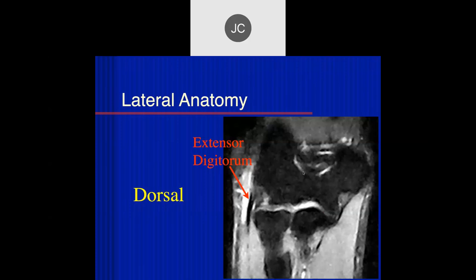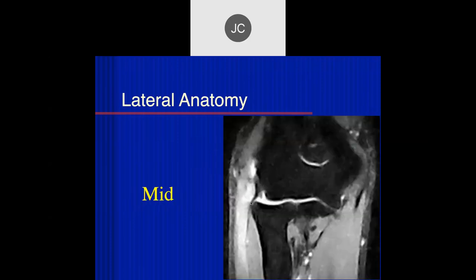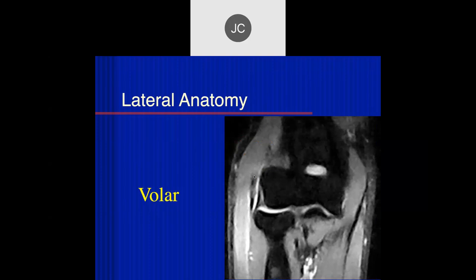The three components of the common extensor tendon are: the extensor digitorum communis most distally, the extensor carpi radialis brevis (ECRB) in the middle - which is the one generally initially torn - and the extensor carpi radialis longus which attaches more proximally. The brevis is the bad guy - it's the symptomatic one you want to pick up early. Here is a case where the brevis inserts and we see a lot of fluid collection there - that's because there's a tear of the brevis in this location.